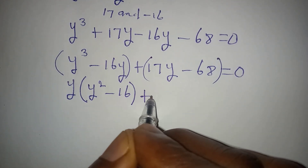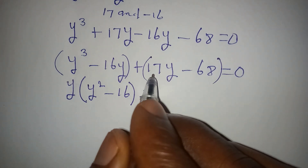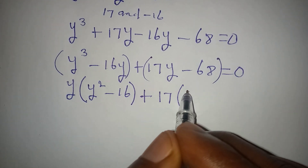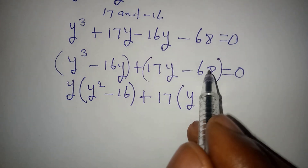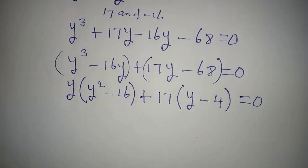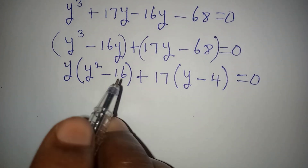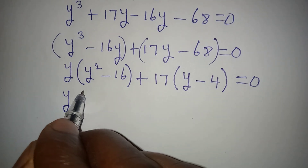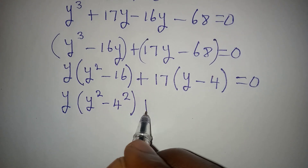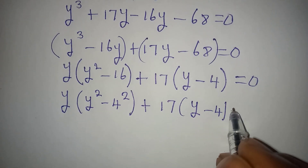Putting these together, then for the second group, 17 is common. So I pick 17 out, and y minus 4 is left inside — since 68 divided by 17 gives 4. This gives us y times (y squared minus 16) plus 17 times (y minus 4) equals 0. Now I can apply difference of two squares to y squared minus 16, writing it as (y minus 4)(y plus 4).